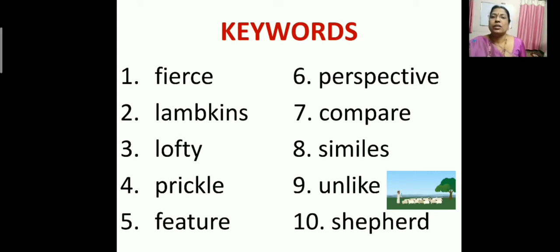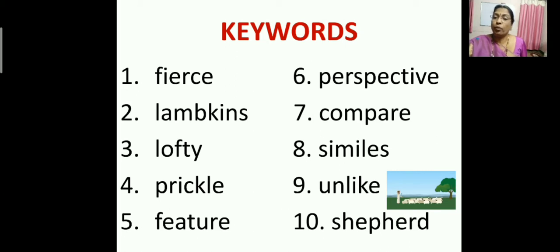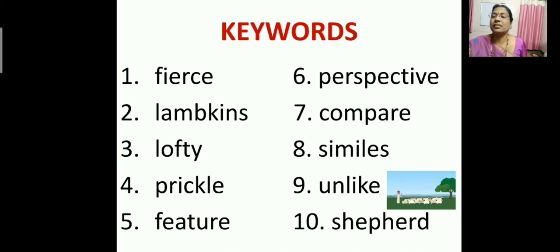Next is Perspective — P-E-R-S-P-E-C-T-I-V-E — which means the way you look at or see something. Next is Compare, meaning examining similarities or differences. Then Simile, a poetic device used by poets to compare two unlike things using the conjunction words 'like' and 'as'. Next is Unlike, which means not similar or different from the other one.